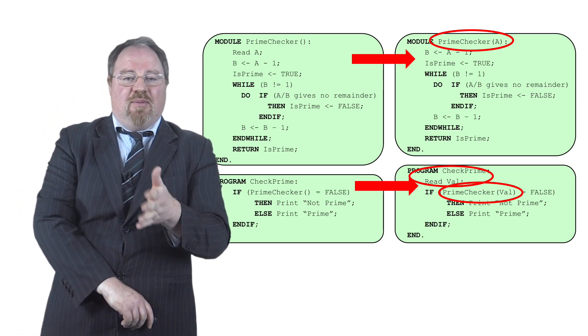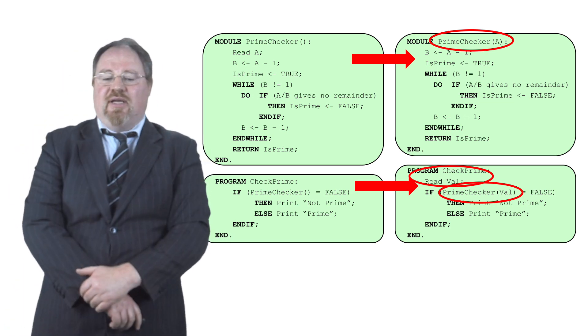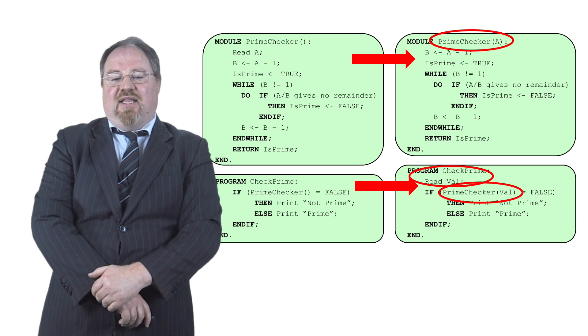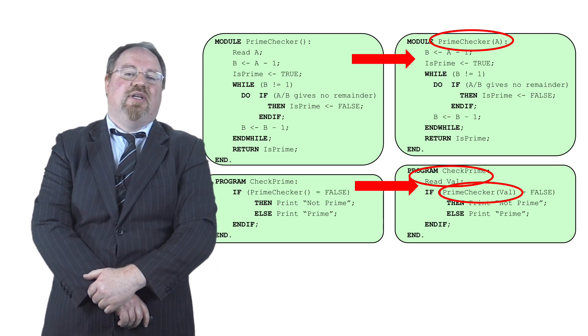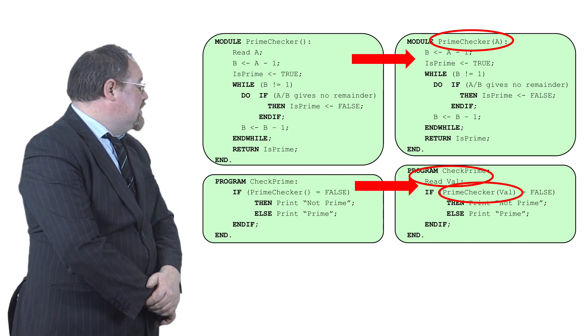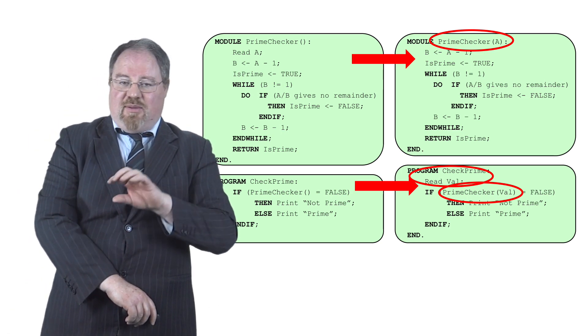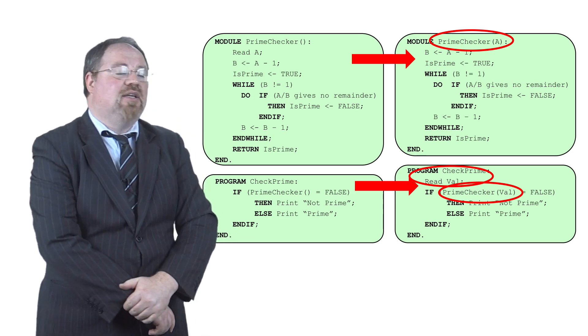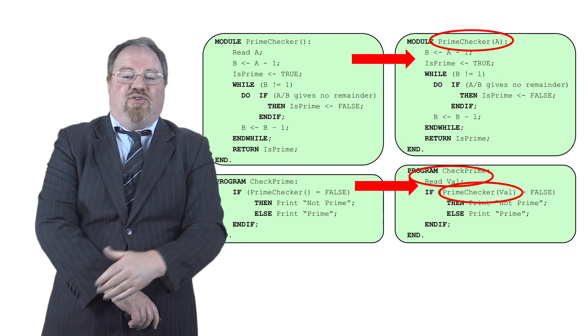Instead of calling it prime checker open bracket close bracket, now we do prime checker val, the input value. As a consequence of that, that means that value has to be passed into the module. And in this case, whatever name we use in the main program, we don't have to use that in the module definition of the parameter. And we've called it A just for fun.